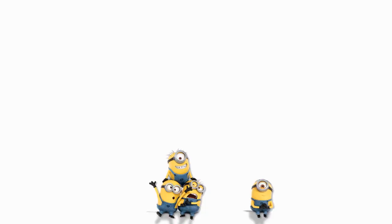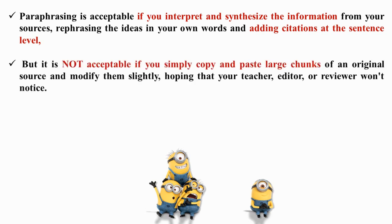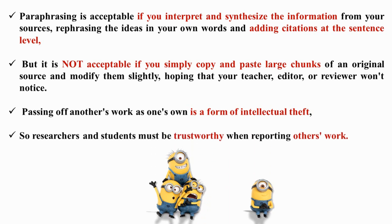Paraphrasing is important to avoid plagiarism — that is its major purpose. Paraphrasing is acceptable if you interpret and synthesize the information from the sources you are reading. Adding citations at the sentence level is important; by citing, you are acknowledging the original author's idea. It is not acceptable to simply copy and paste large chunks of text. Passing off another's work as one's own is intellectual theft, and researchers must be trustworthy when reporting others' work.